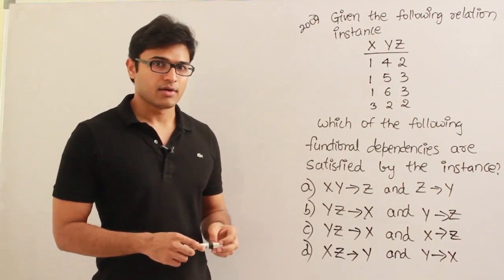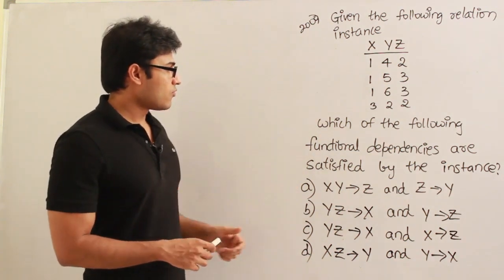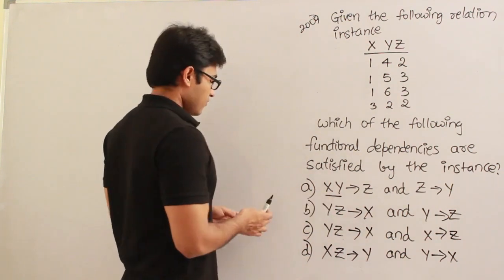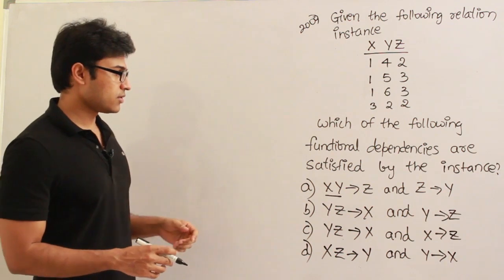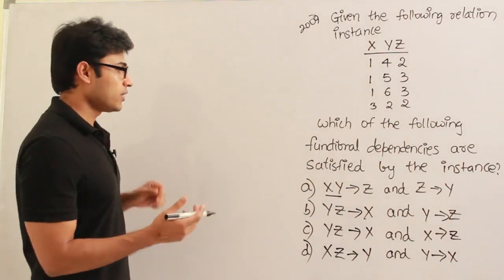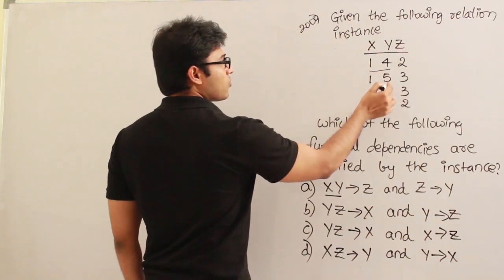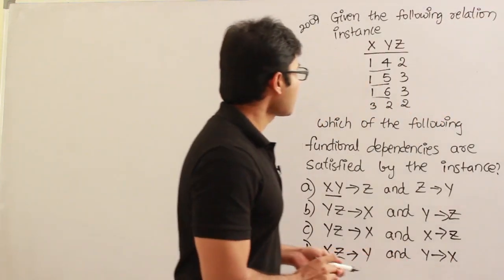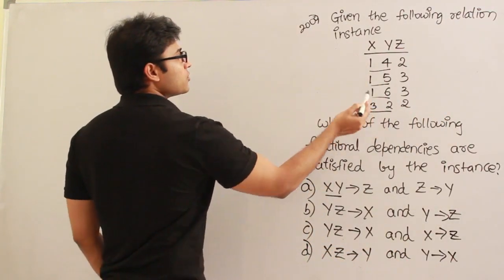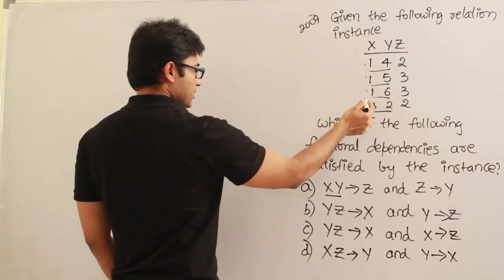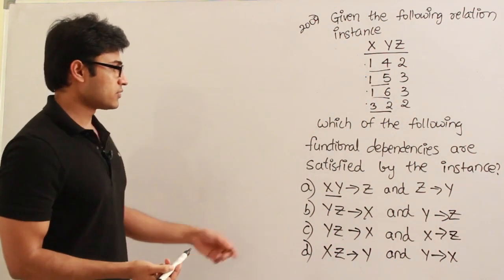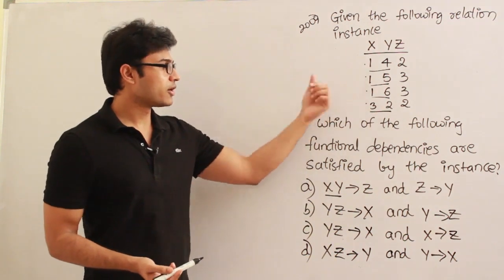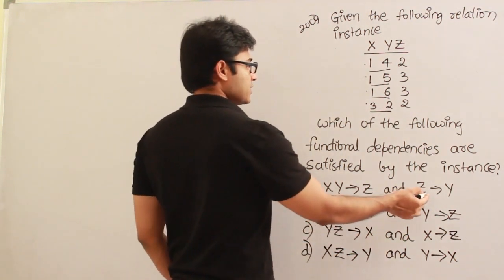Now let's see if this one holds or not. XY - when will it fail? Whenever there is a repetition of values in the X and Y for two tuples. If you watch X and Y: 1,4, 1,5, 1,6, and 3,2. All the values are distinct, isn't it? Therefore there is no way this one will get violated. Violation will be there only when there is repetition in the left hand side. There is no repetition at all, they are all unique, no violation.